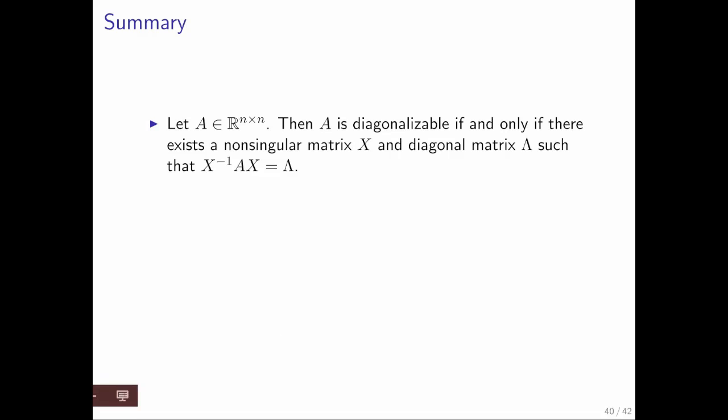So in summary, A is diagonalizable if and only if there is a matrix X and the diagonal matrix lambda such that X inverse A X equals lambda. And there's a couple of different useful ways in which one can write that. All of them given here except there's an X missing there. So let's keep that in mind. I'm not going to keep correcting that.